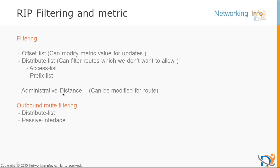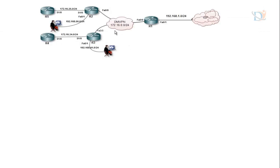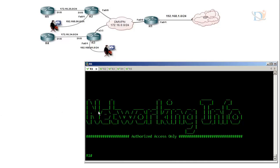Let's look at the topology and start configuring. I have a RIP topology where there is a DMVPN tunnel between routers 1, 2, and 3. First we'll configure the offset list.